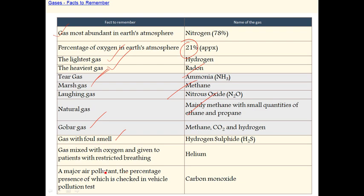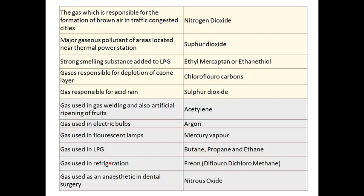A major air pollutant — the gas whose percentage presence is measured in vehicle pollution tests — is carbon monoxide. Carbon monoxide is the main air pollutant.